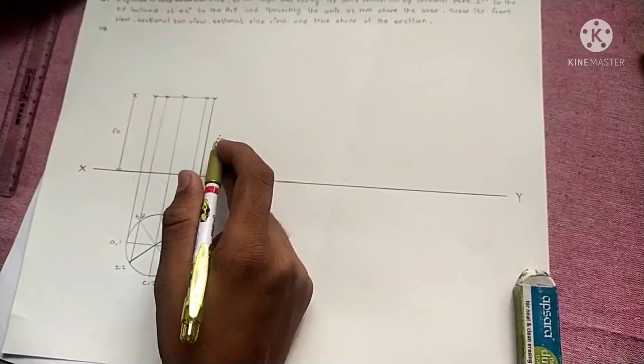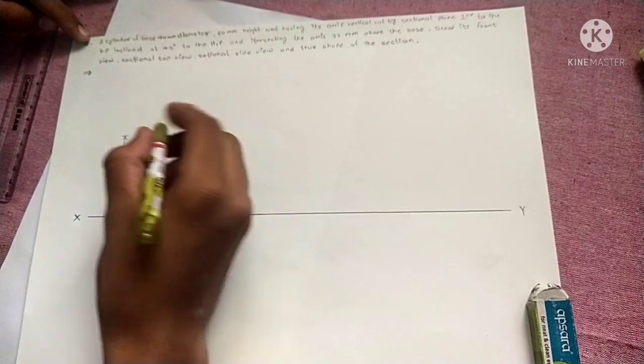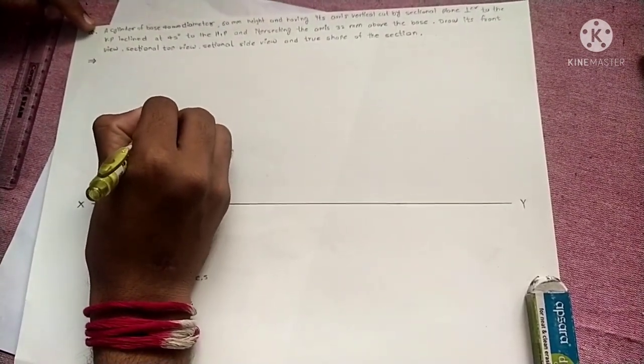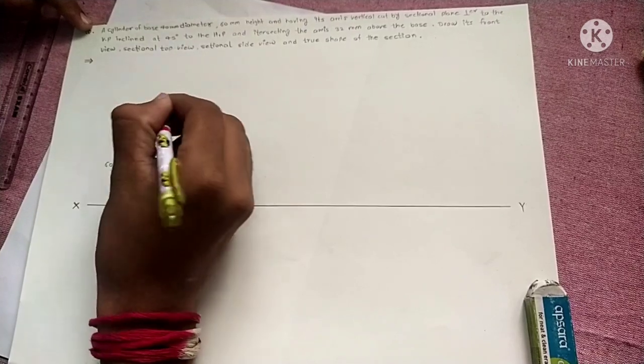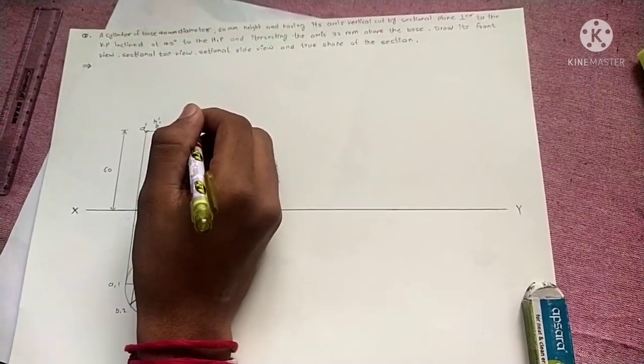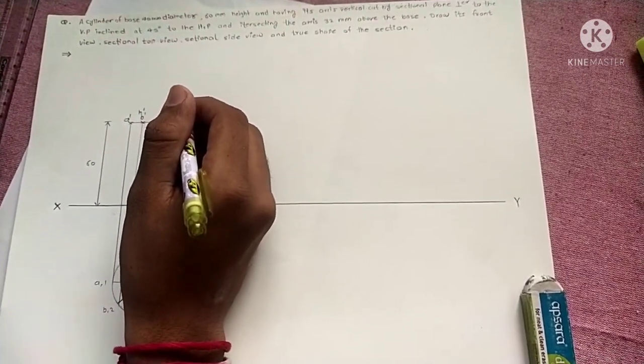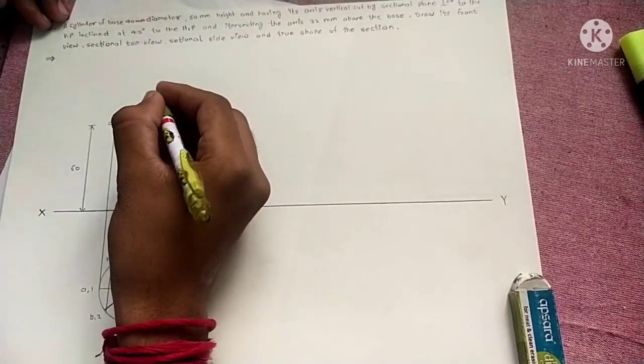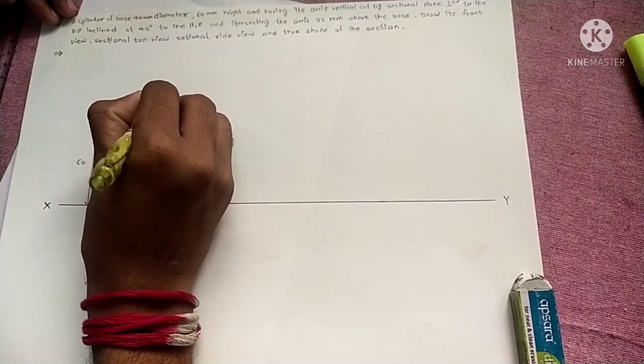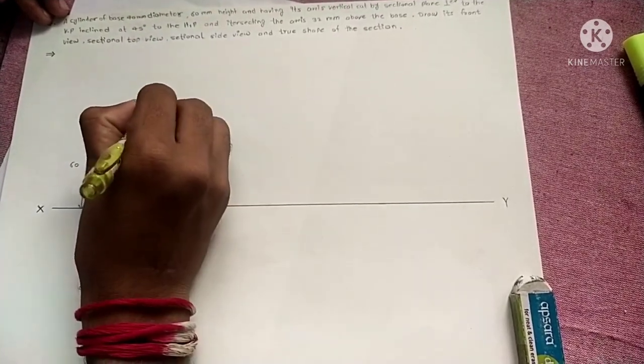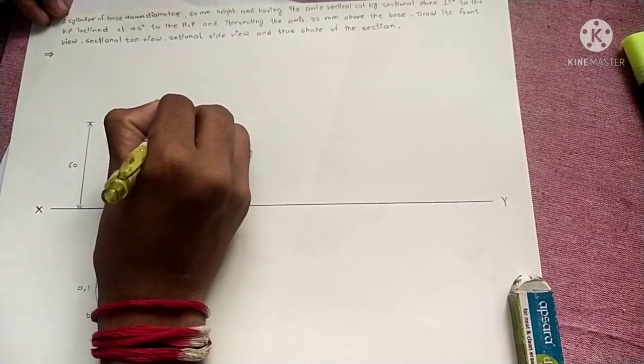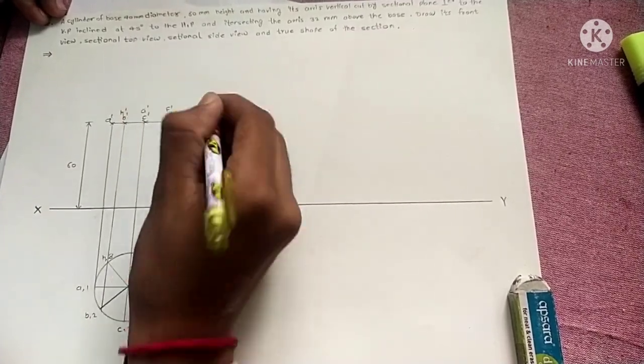All edges are inclined to VP. The point names are A', H', B', G', C', F', D', E'.